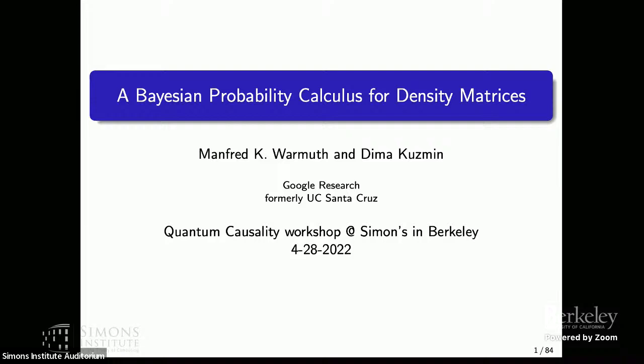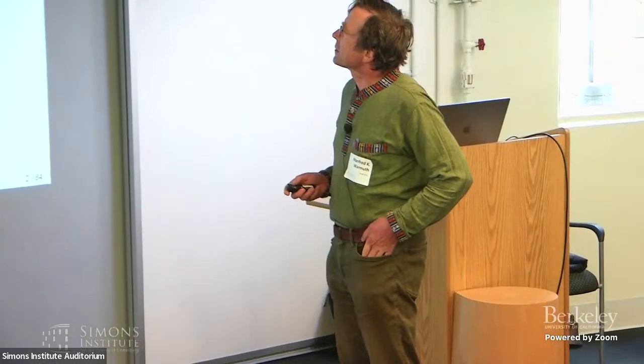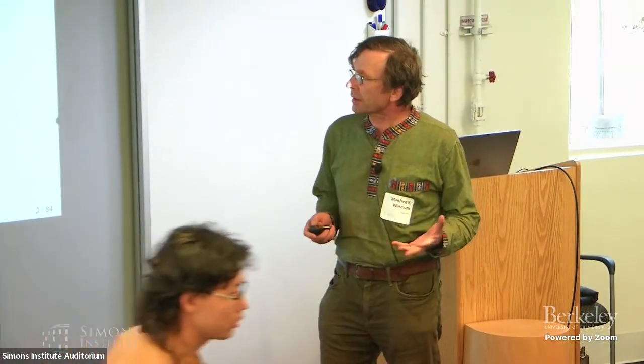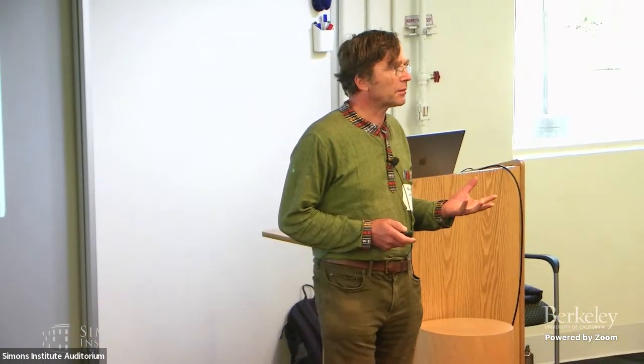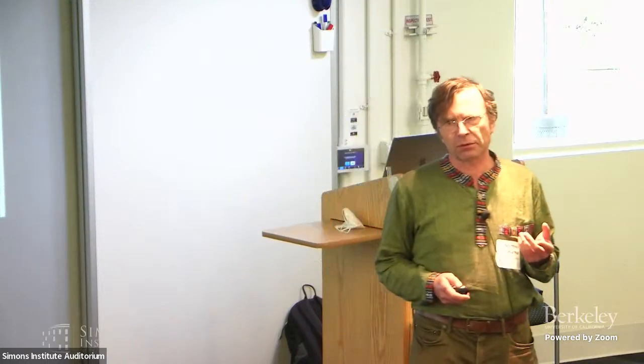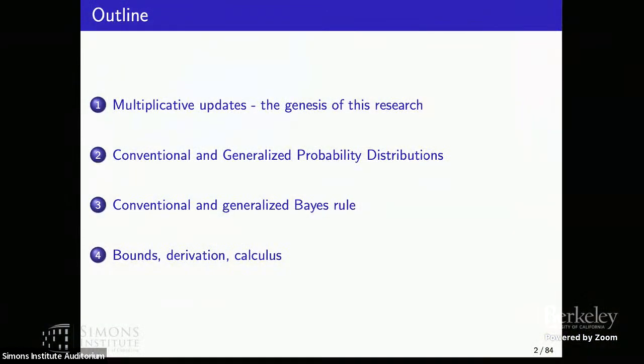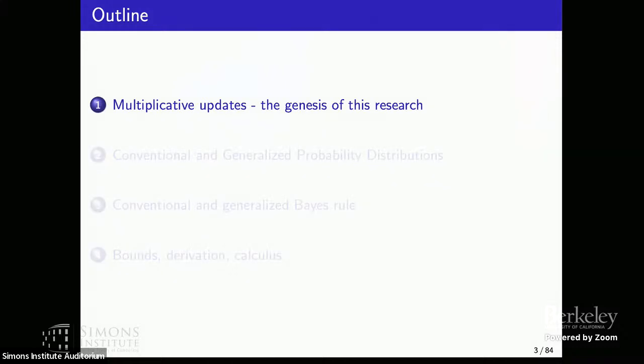Our speaker will be Manfred Wormuth from Google Research, and he will be presenting a Bayesian probability calculus for density matrices. Thanks, Tom, for inviting me. So I will talk about how we got there. We used to reason with probability vectors. In quantum physics, you reason with density matrices, and I claim that we have a Bayes rule for density matrices. So I have lots of pictures. Hopefully, I stay at a high enough level to explain it.